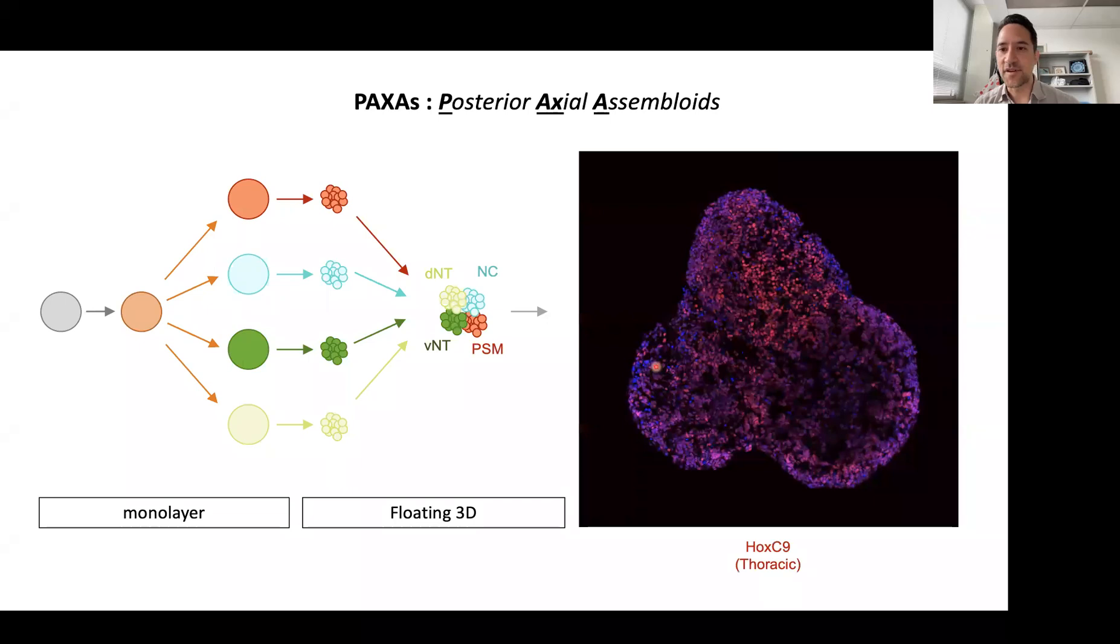We call them axial because if you section these assembloids and stain for Hox proteins, we see that there is very robust expression of HoxC9, which is expressed at the thoracic level. So these assembloids have definitely come from the posterior body axis and not the cranial axis.